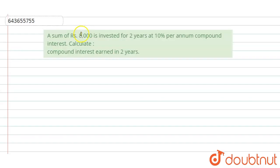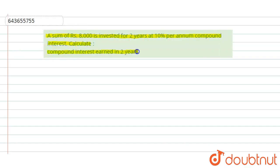Welcome to this video. The question is: a sum of rupees 8000 is invested for two years at 10% per annum compound interest. Calculate the compound interest earned in two years.